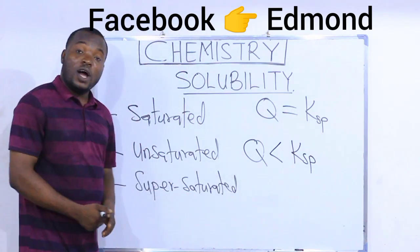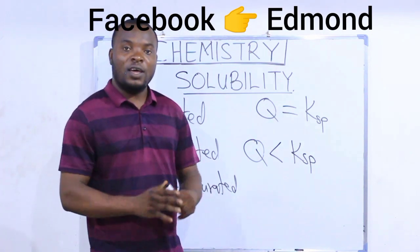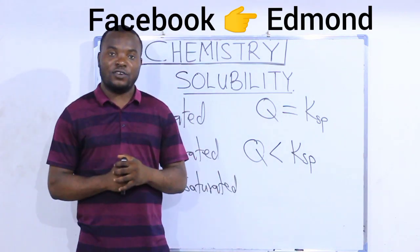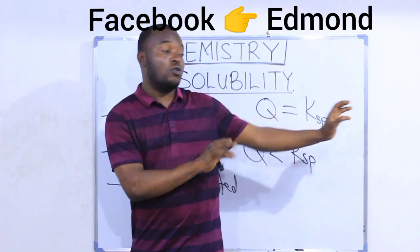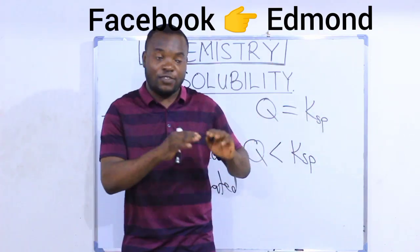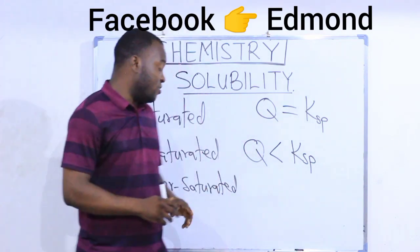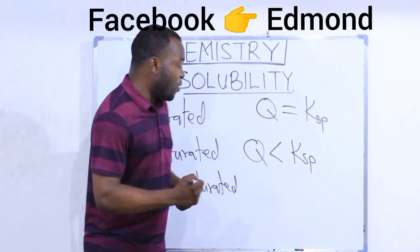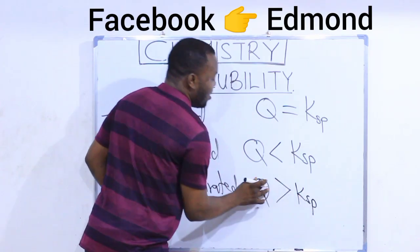The last one is the supersaturated solution. A supersaturated solution is a solution that contains more than the quantity of solute it can dissolve. To summarize: when the solution contains exactly what it can dissolve — saturated; when it contains less than it can dissolve — unsaturated; when it contains more than it can dissolve — supersaturated. For a supersaturated solution, Q is greater than Ksp.